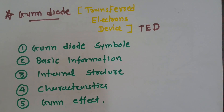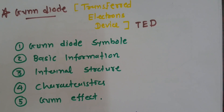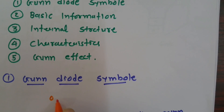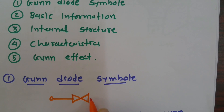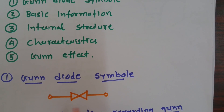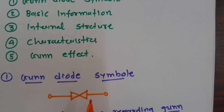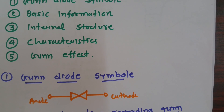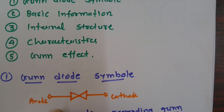Let us begin with the basic symbol of the GUN Diode. The symbol indicates the GUN Diode where one terminal is the anode and the other is the cathode. The symbol appears bidirectional, but actually it is not a bidirectional device — the symbol just seems like it is bidirectional.